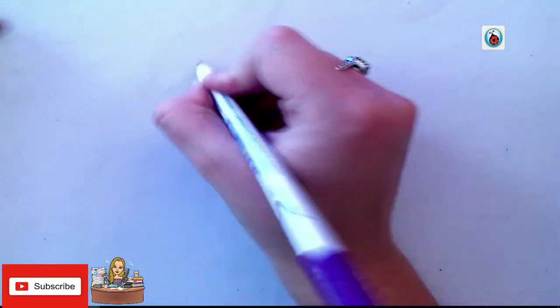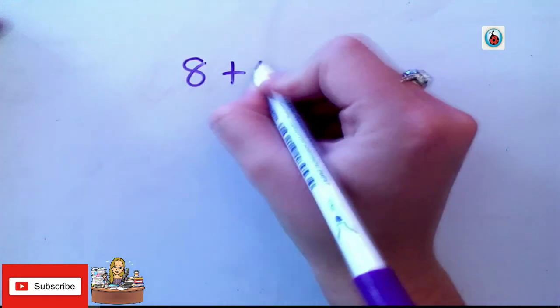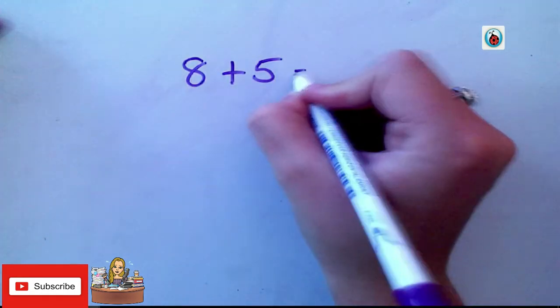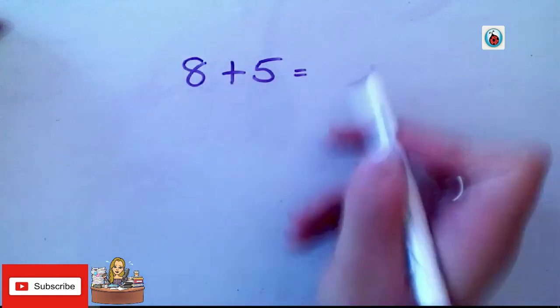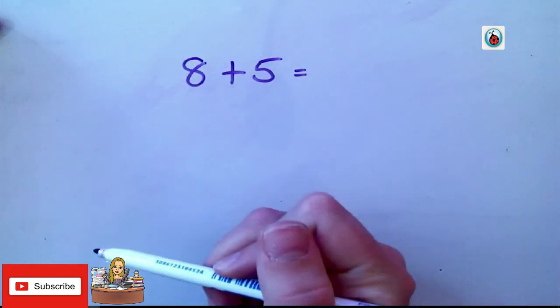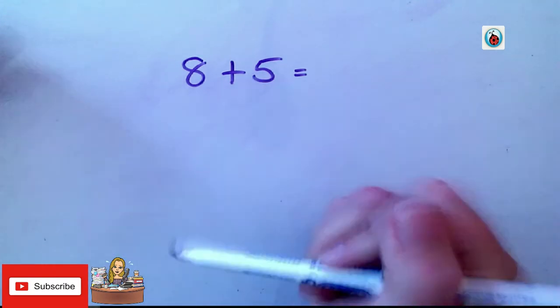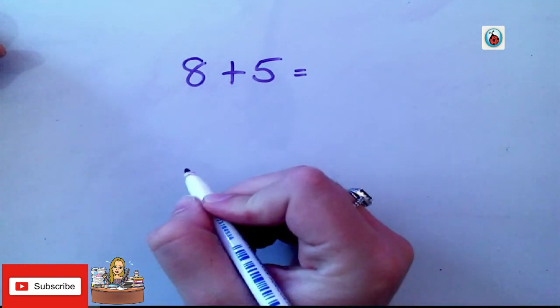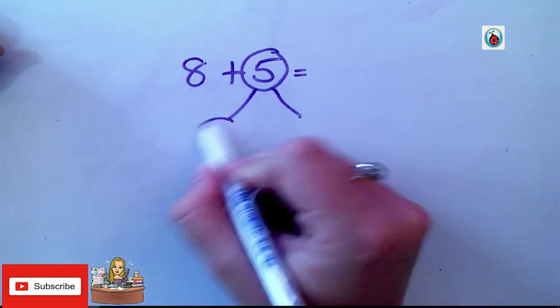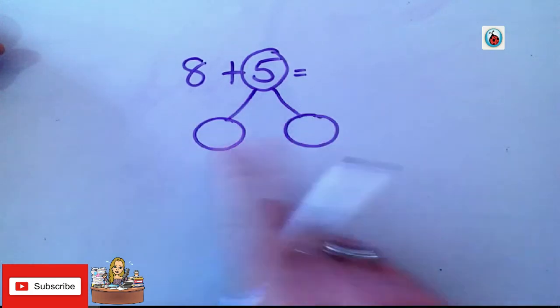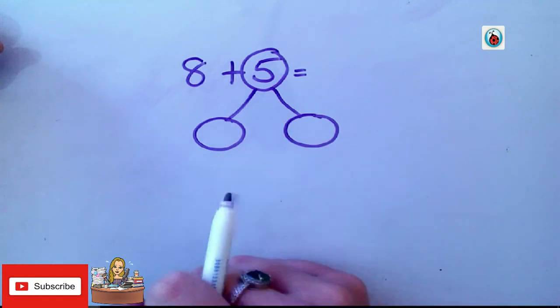The first calculation we're going to do, let's say you had 8 add 5. To do this calculation, this first number sentence is quite tricky, or it can be quite tricky, because you're going across the 10s. So, first job is we're going to partition this 5 into two different numbers to make it easier to work with.